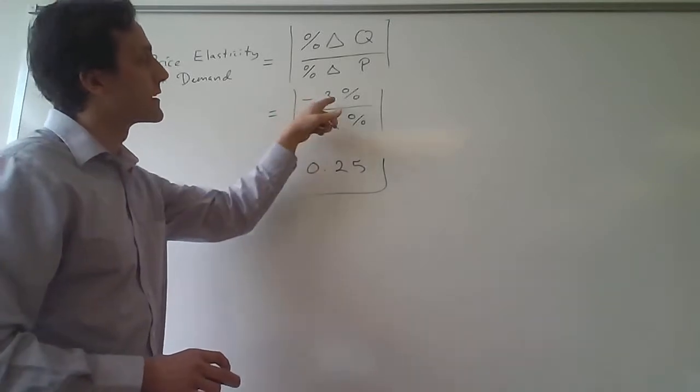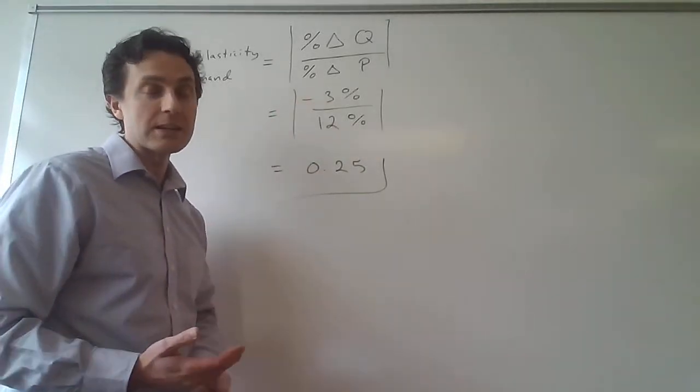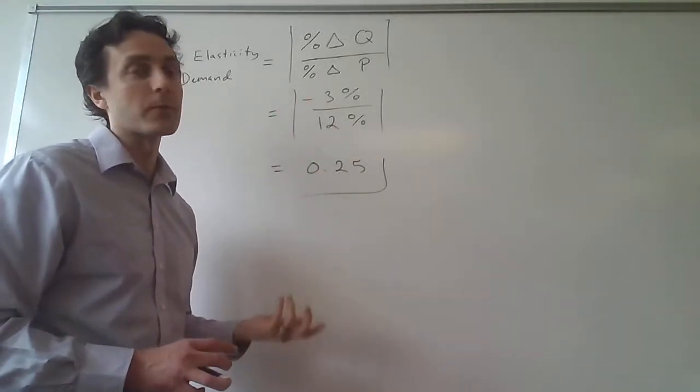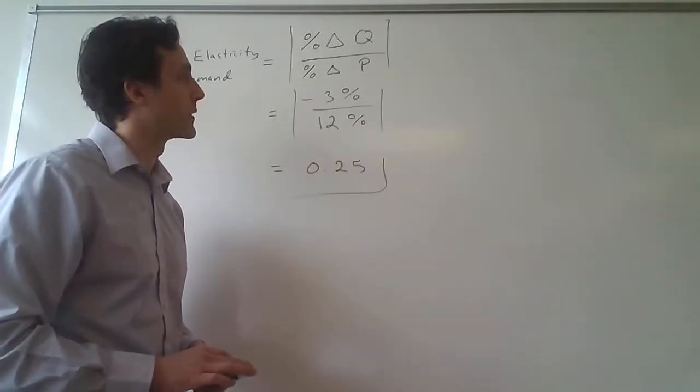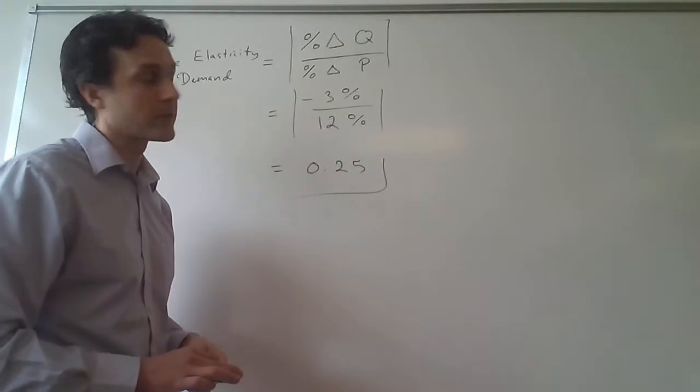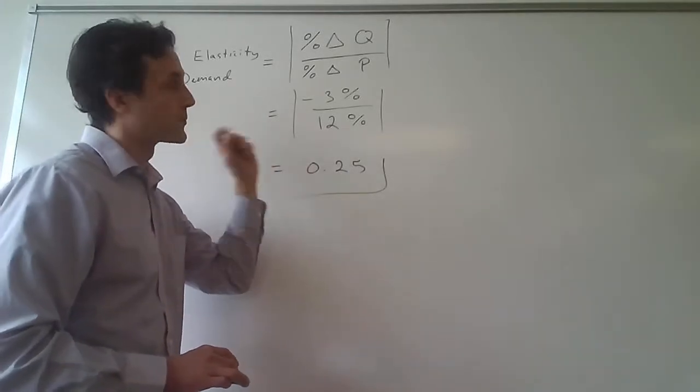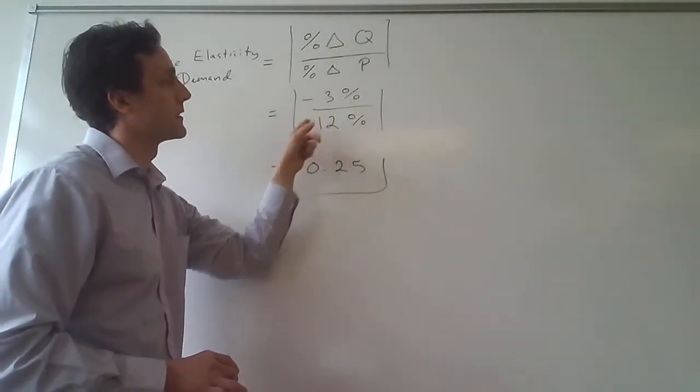Okay, so that means in the numerator here, since there's a 3% decrease in the quantity demanded for cell phones, we have a negative 3%. It's because cell phone quantity demanded went down by 3% due to a 12% increase in price, which goes in the denominator,